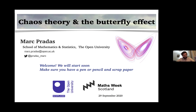Chaos theory is a very important branch in mathematics that describes many phenomena relevant to real world applications, including physics, chemistry, engineering, and biology. The aim of this session is to show you, within some simple examples, the mathematics that are behind chaos theory.